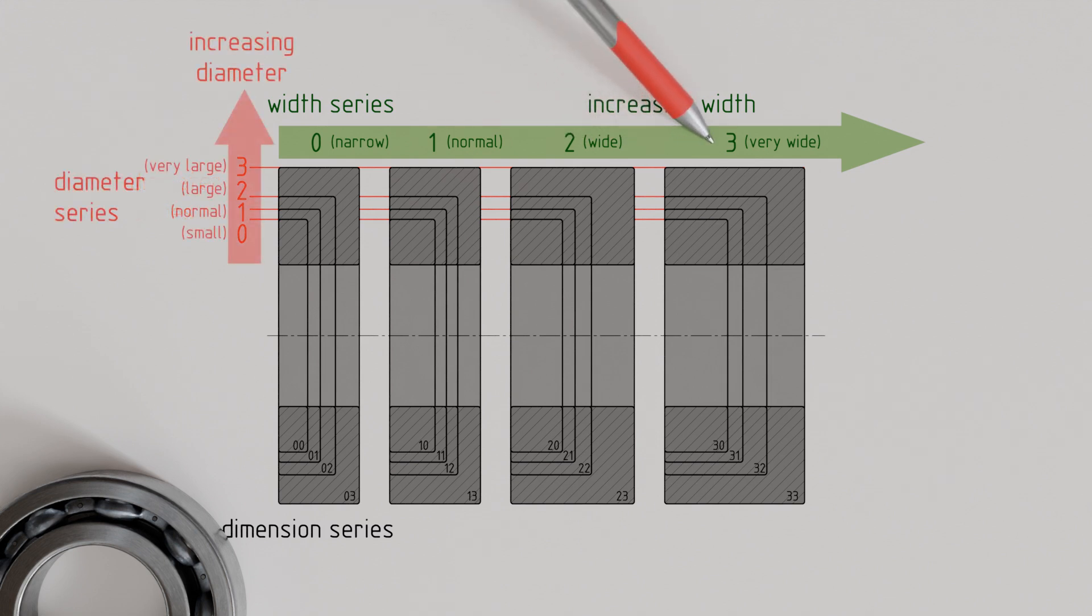The diameter series, on the other hand, defines the outer diameter and thus represents a measure of the bearing size. Here as well, the size increases from 0 through 1 and 2 up to 3.